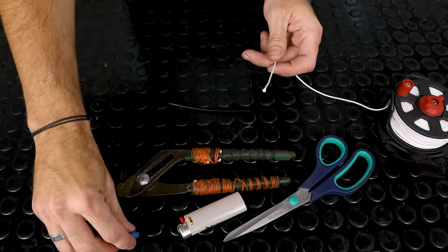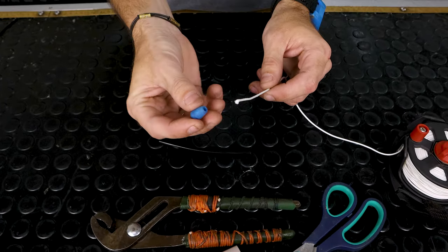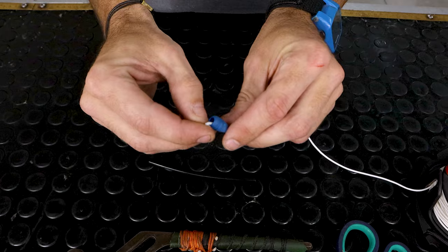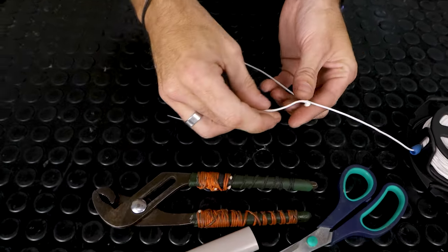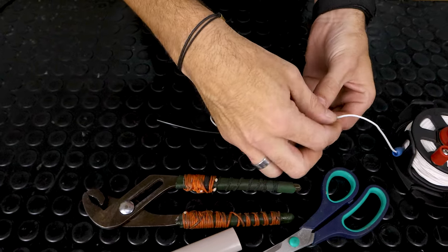Pull out sufficient line so you can slide a bead onto the line, and then tie a knot behind it and slide this tubing onto it.